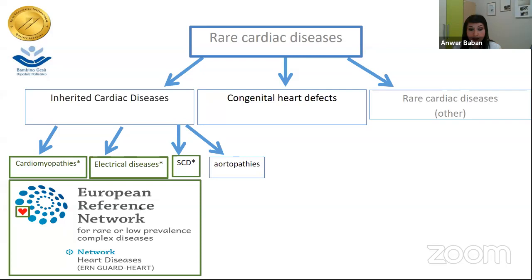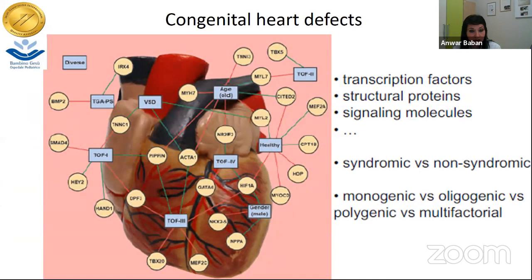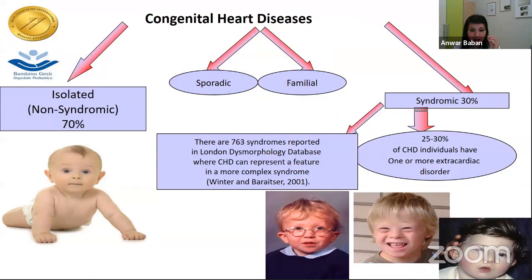The heart is formed from the interaction of many factors — many genes including transcription factors and sarcomeric genes — so it's not always easy and linear to make the diagnosis. The first thing we need when we see a patient with a congenital heart disease is to understand: is this an isolated or a syndromic case? Is this sporadic or familial?